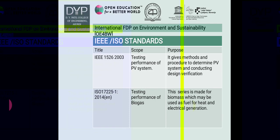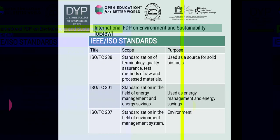There are several IEEE and ISO standards covering title, scope, and purpose. IEEE 1526-2003 covers testing performance of PV systems, providing methods and procedures to determine PV system performance and conduct design verification. ISO 17225:2014 covers testing performance of biogas — this series is made for biomass used as fuel for heat and electrical generation. ISO/TC 238 covers standardization of terminology, quality assurance, and test methods of raw and processed materials.